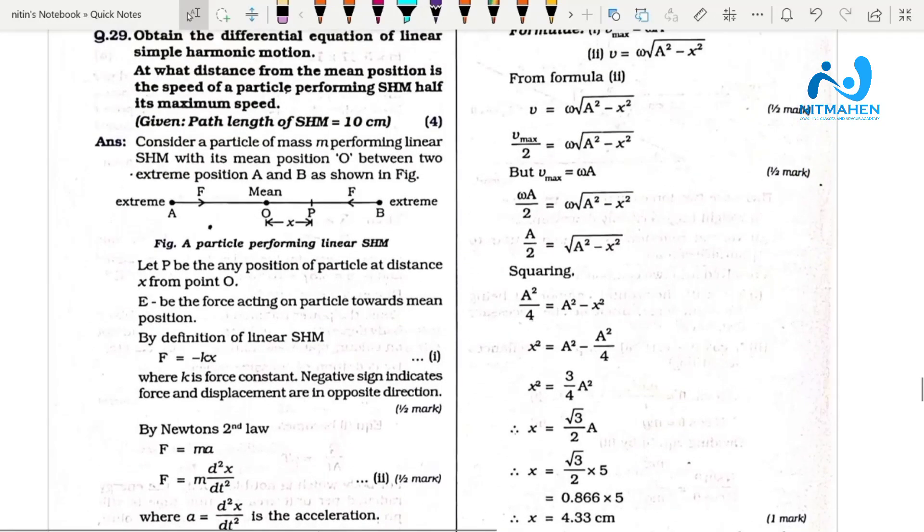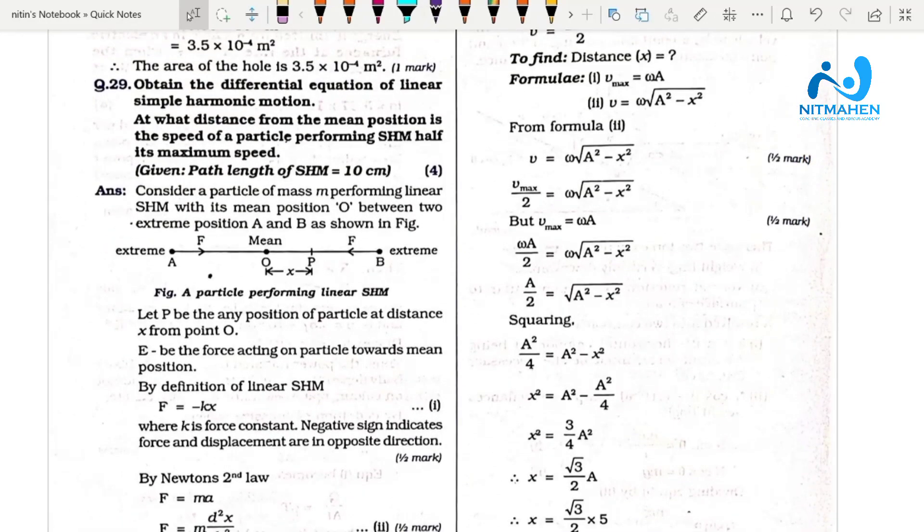The problem asks: from the mean position, what is the position when the speed of the particle is half its maximum speed?